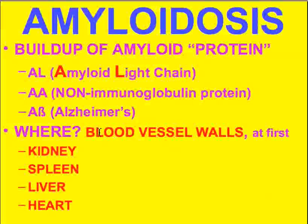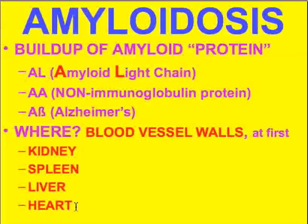Where does amyloid build up? It builds up primarily in blood vessels. As the process becomes more extensive, it goes beyond the blood vessel itself and affects whole organs like the kidney, spleen, liver, and heart. Significant dysfunction of these organs is very common in patients with amyloid, with the kidney being probably the single most common site.